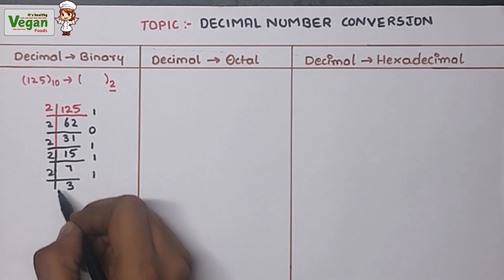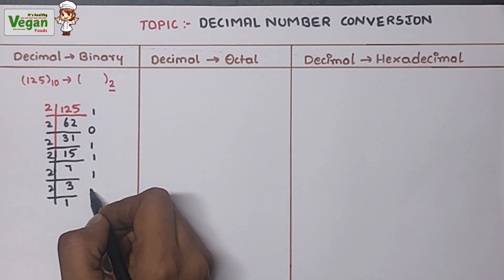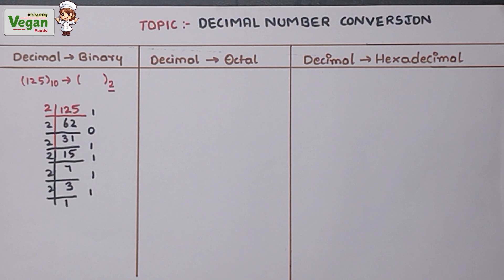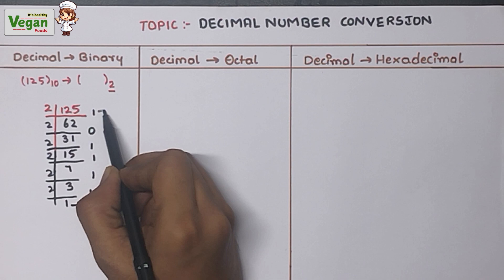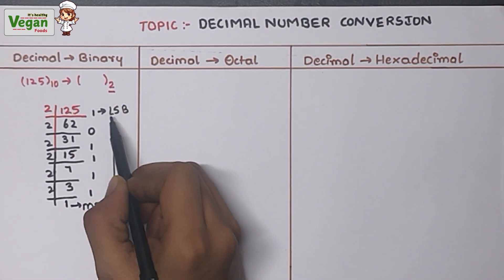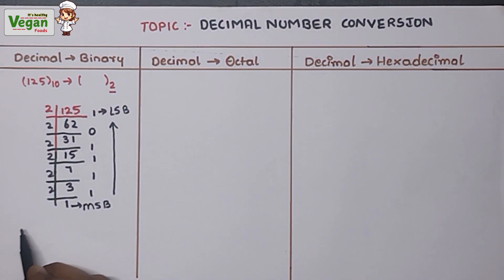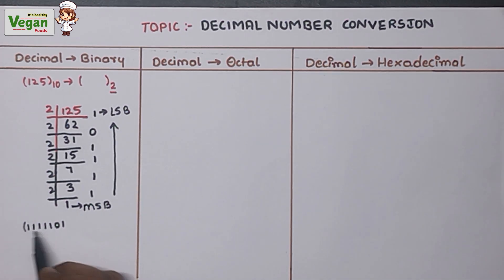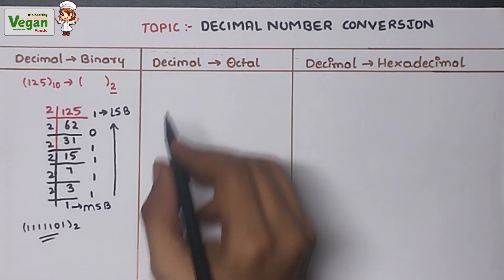Continuing: 7 ÷ 2: 2×3=6, remainder 1. Then 3 ÷ 2: remainder 1. Finally 1 ÷ 2: remainder 1. We write from most significant bit to least significant bit, so the binary value is 1111101 base 2. We have now converted the decimal value 125 to binary.